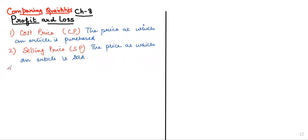Next is Profit. If Selling Price (SP) of an article is greater than the Cost Price (CP), then there is a profit. We can find profit as Selling Price minus Cost Price.